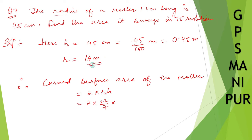So 2 times 22 by 7 times r. What is r? r is 1.4 meters, so 1.4 times h. What is h? It is 0.45. Now I can cancel this 2 and 7 with 14 - 7 into 14, but there is one decimal point, so write 0 here.